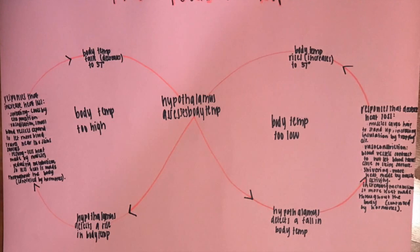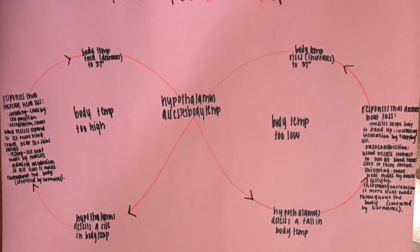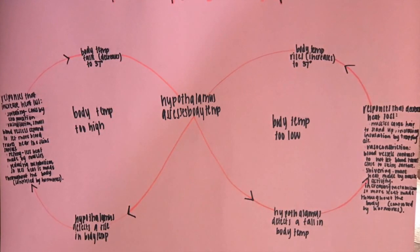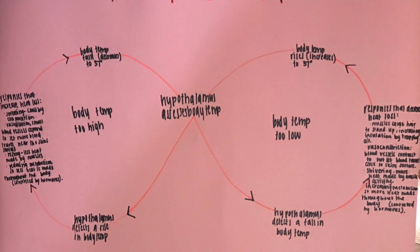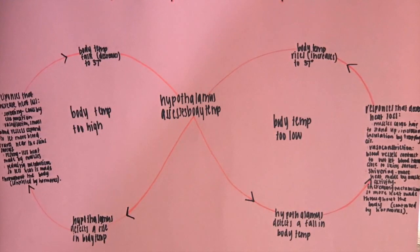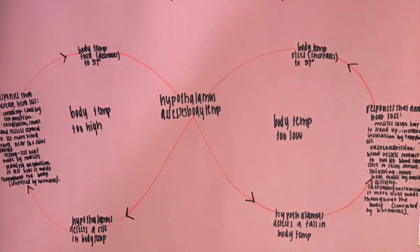Humans need homeostasis to keep the optimal environment for enzymes to function within cells. This is done through the regulation of body temperature, which is mainly done by the skin.